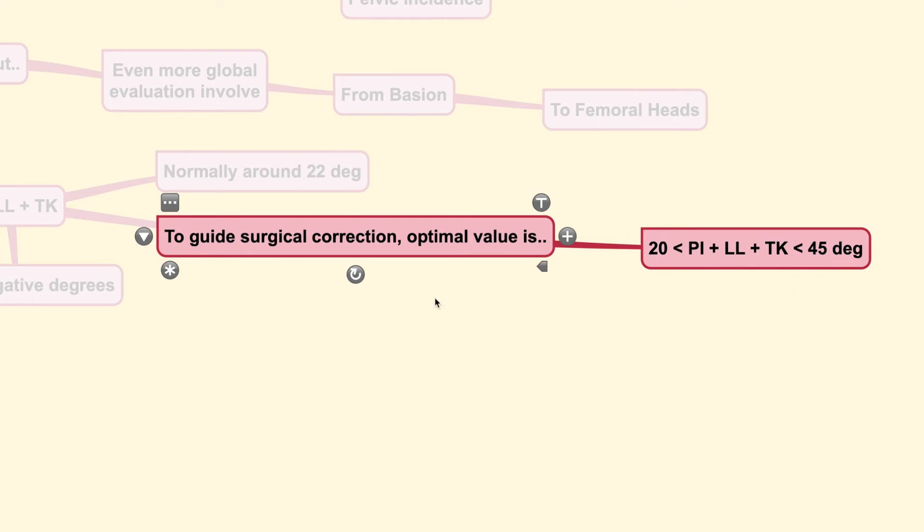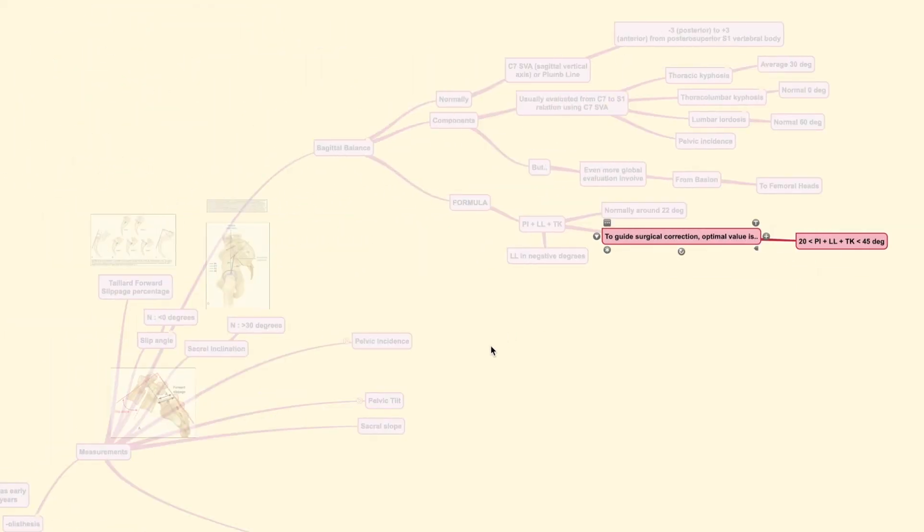Now, when you have obtained all those data and you have known this formula, you should be able to determine the value of the correction that you are going to do during surgery. Because the final achievement is considered well if the patient's sagittal balance is well. Now, moving on...